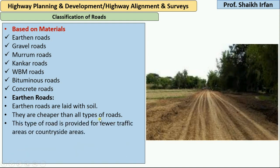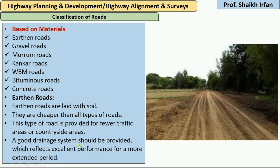This type of road is provided for fewer traffic areas or countryside areas — you cannot use it for national highways, state highways, or big projects. A good drainage system should be provided for excellent performance over a more extended period. Drainage facility should be very proper because there are chances of mud formation, especially from rainwater.